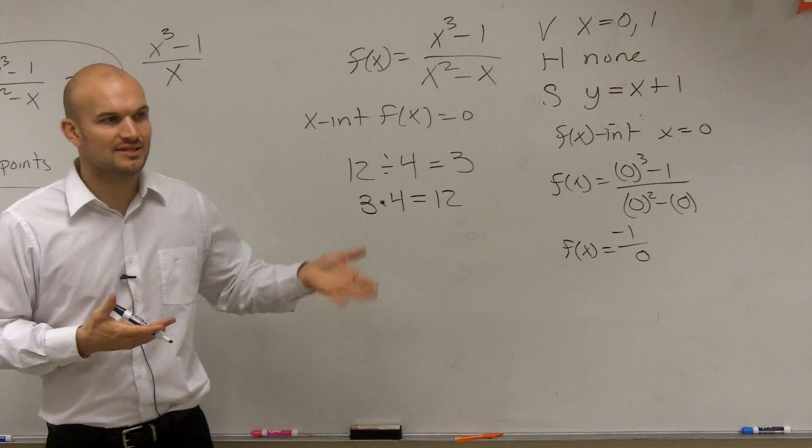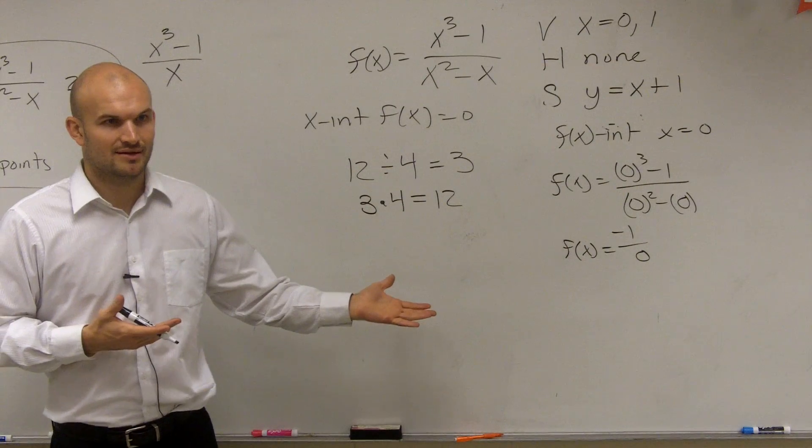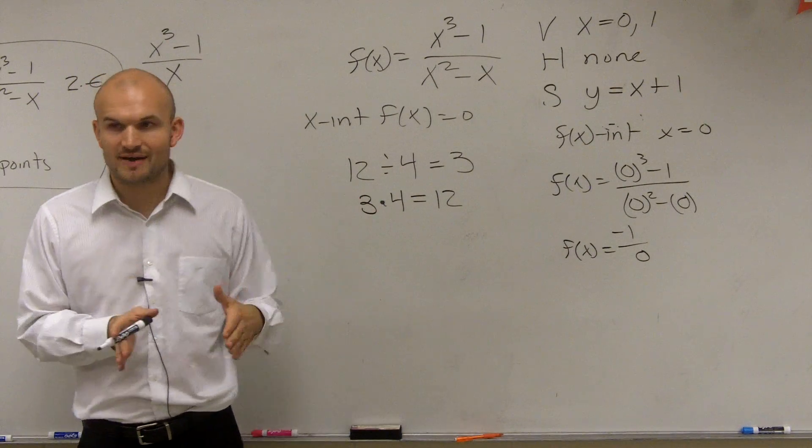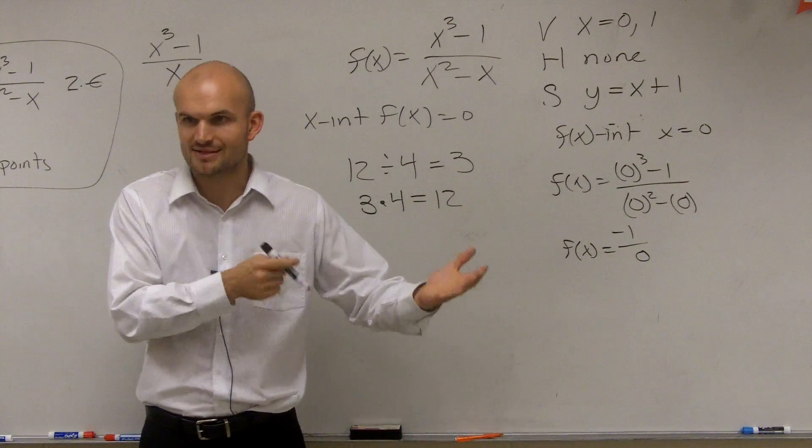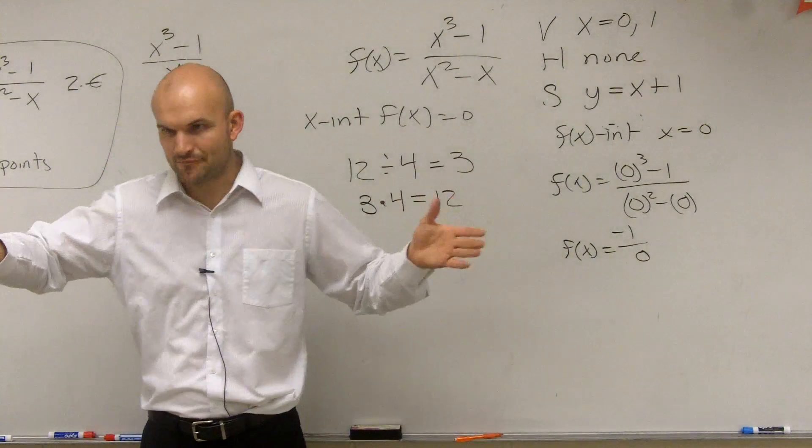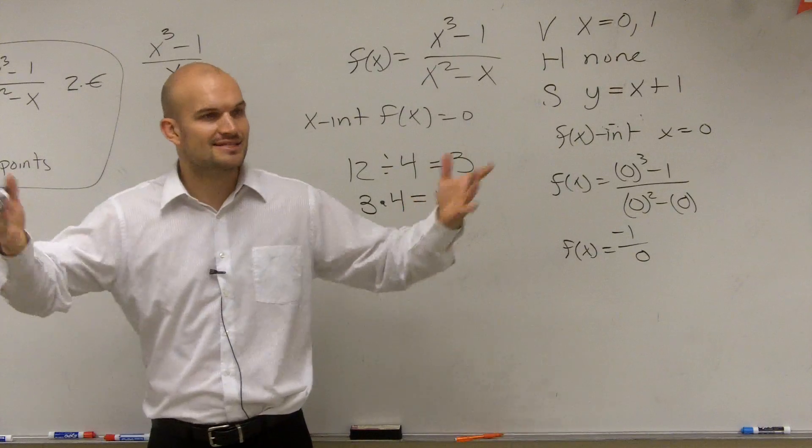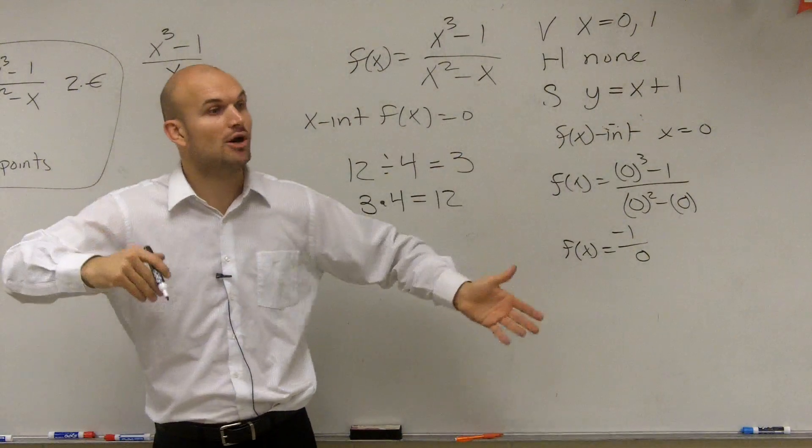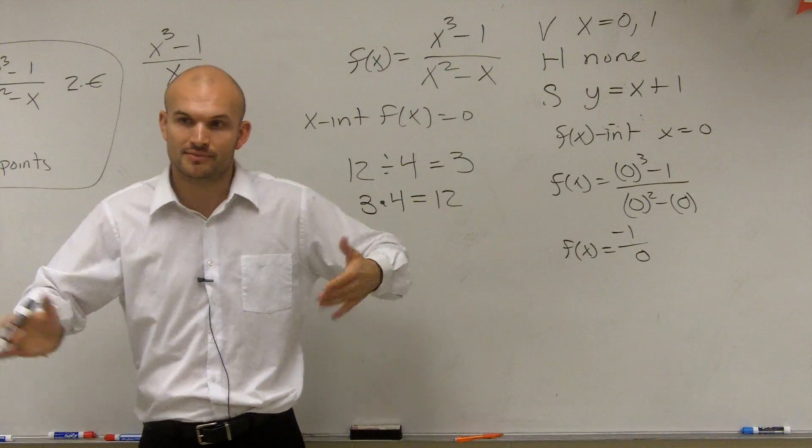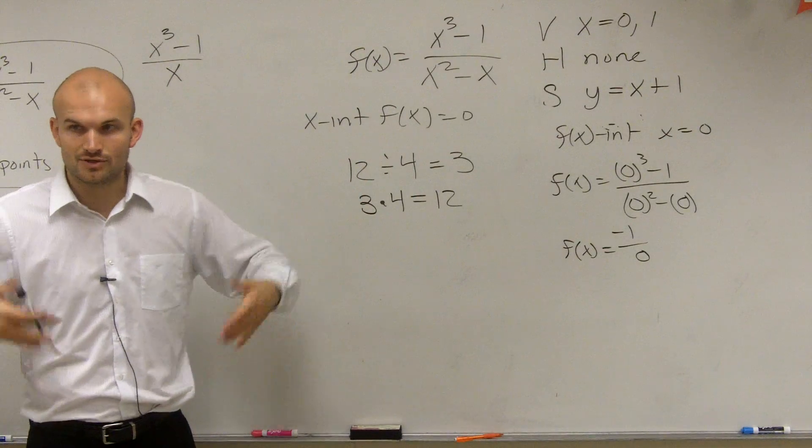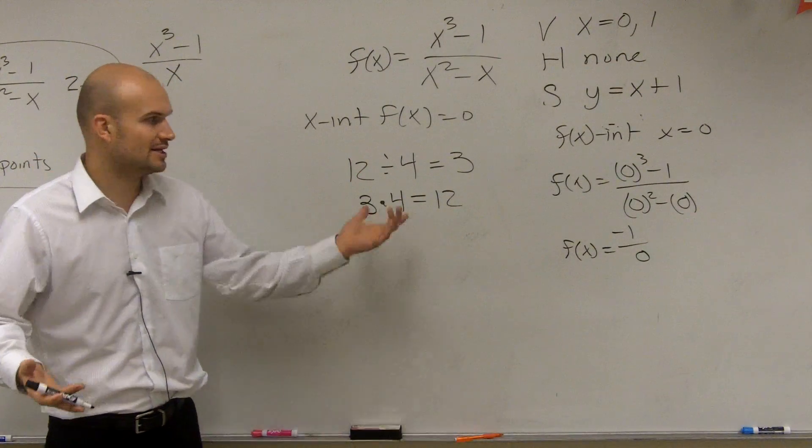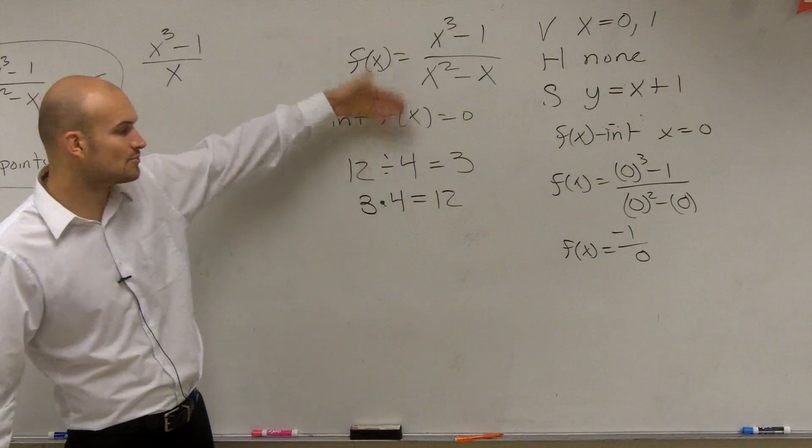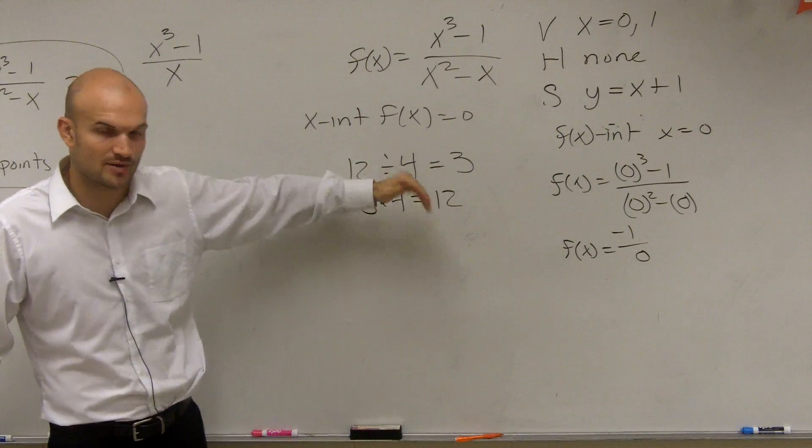Do you remember we did this with polynomials? We said f of x equals d of x times q of x plus r of x. Remember that problem on your test where you had to write it in that format? It just says divide the polynomial and then write it as a multiplication problem. That was your division algorithm. You have your f of x equals your d of x, your divisor, times your quotient plus your remainder equals your function. So take a division problem, you can write it as a multiplication problem.